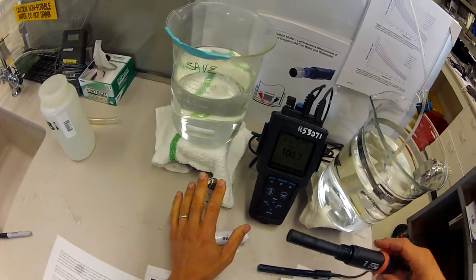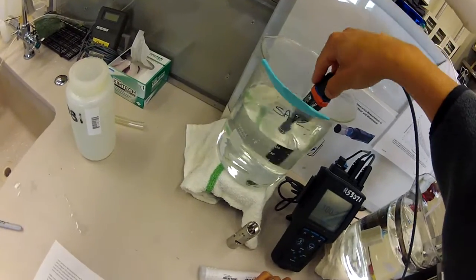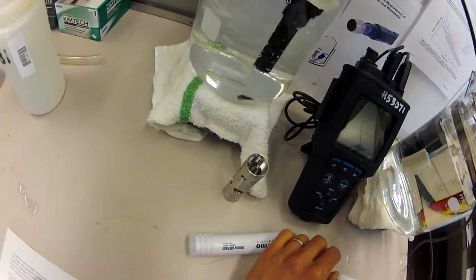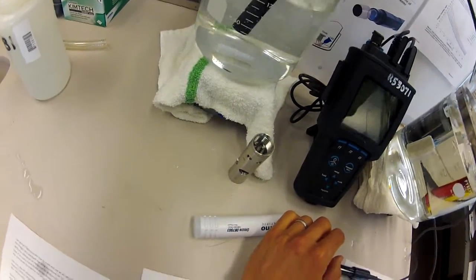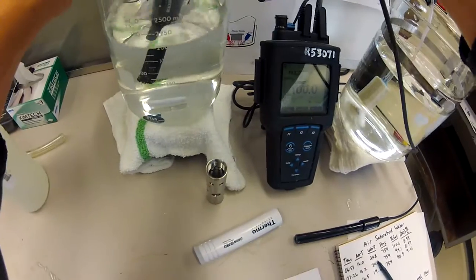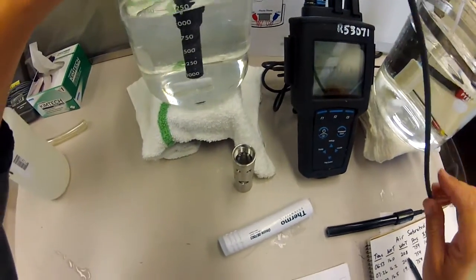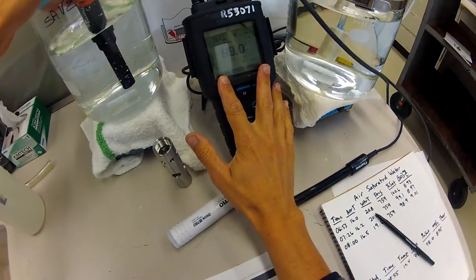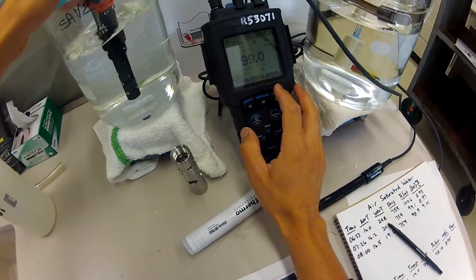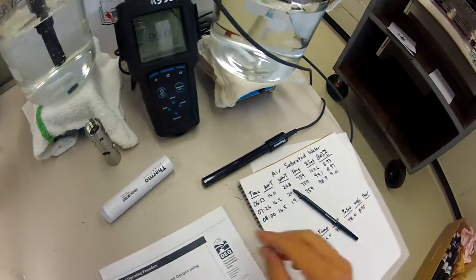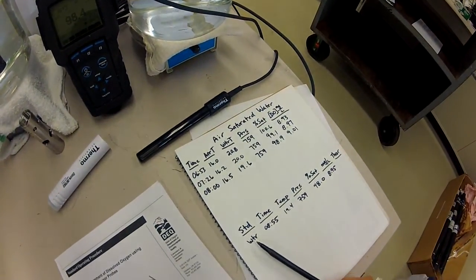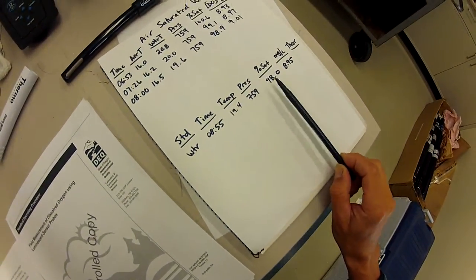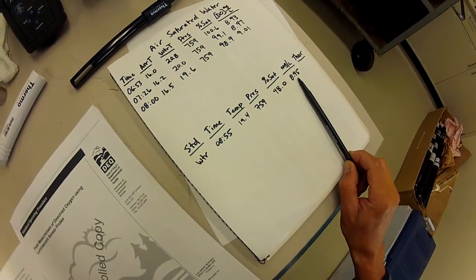I'm going to go ahead and not use the guard here and just be careful with the probe. The guard does take a little bit longer to equilibrate temperature-wise, it can slow things down. I do recommend using it in the field. I'm just going to wait for the temperature to equilibrate here. Then I will record what I get in my water standard - time, temperature, pressure, percent saturation, and milligrams per liter.